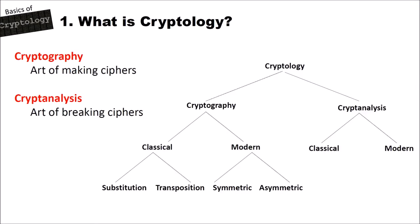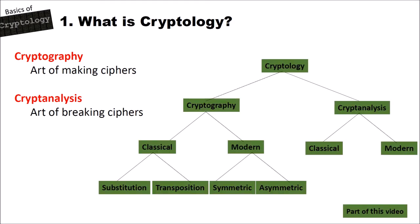As with all videos of the Basics of Cryptology series, we look at where we are with respect to Cryptology. Cryptography is the art of making ciphers and Cryptanalysis is the art of breaking ciphers. This video will cover everything, since keyspace analysis is part of both cryptography and cryptanalysis, and classical as well as modern ciphers have keyspaces — so everything in this video is marked green on this graph here.